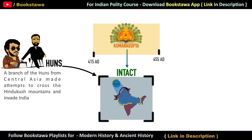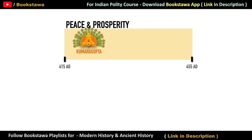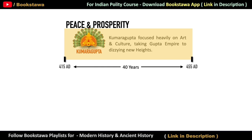He did not fight many battles, nor did he spend on military affairs. That is why there was a lot of peace and prosperity in the Gupta Empire during his rule. In fact, during Kumar Gupta's rule from 415 AD to 455 AD, the main focus in these 40 years was not territorial expansion but art and culture. And that is why during his rule, the Gupta Empire touched new heights of art and culture.